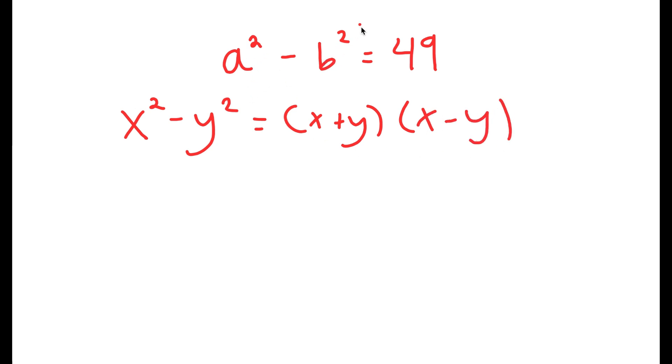In this case, a squared minus b squared, a is x and b is y. So this turns into a plus b times a minus b is equal to 49.